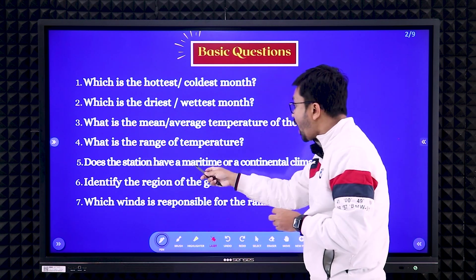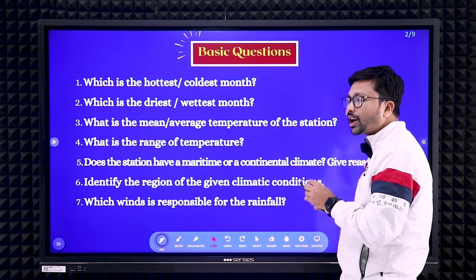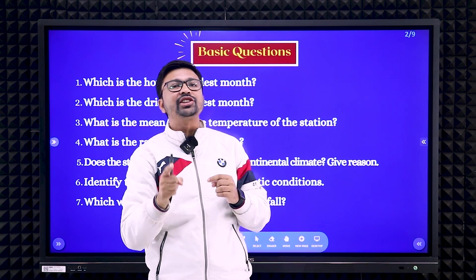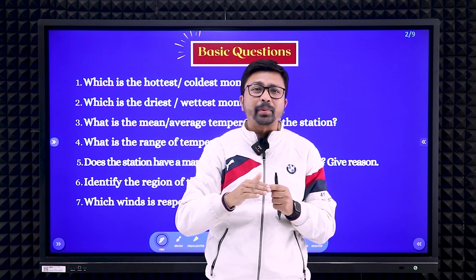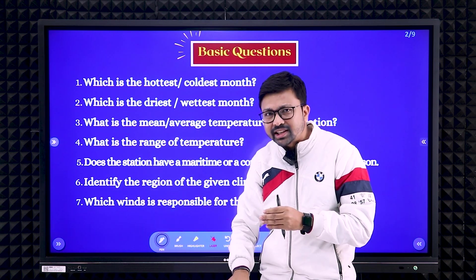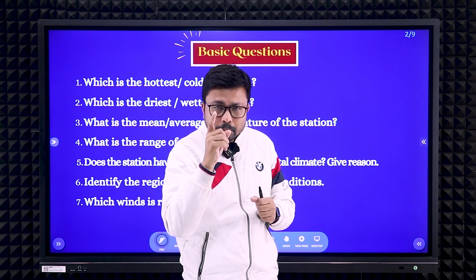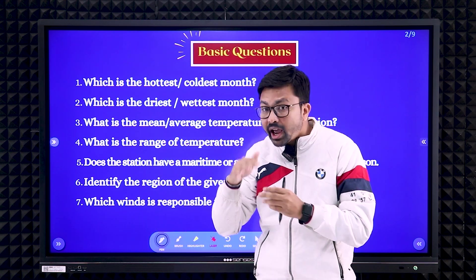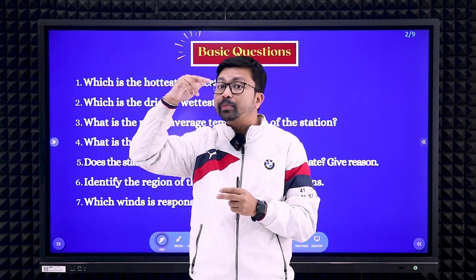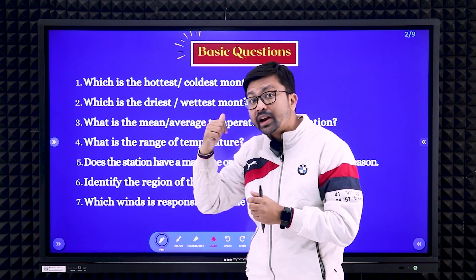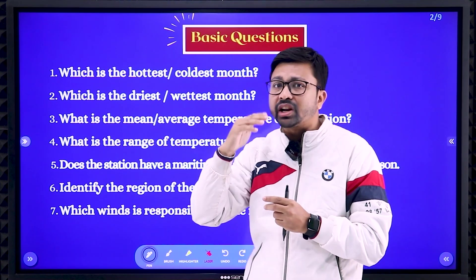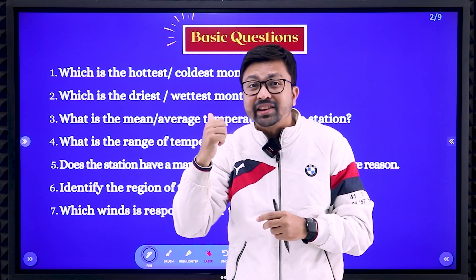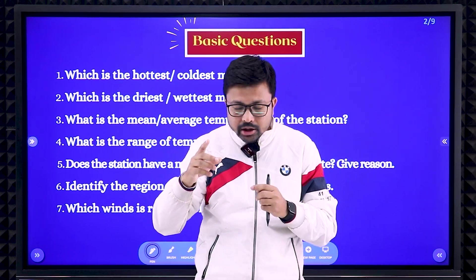Next: does the station have a maritime or continental climate? Simple trick — you need to check the range of temperature. If the range of temperature is below 10 degrees Celsius, it means maritime climate or moderate climate. And if the range of temperature is above 10 degrees Celsius, it means that is the continental climate.